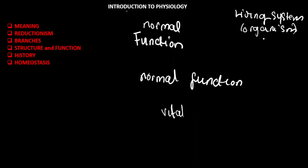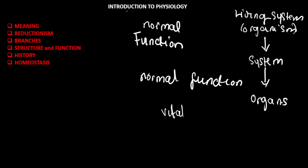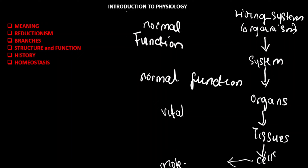In order to study the normal function of this entire organism, which is made up of systems, we would first need a good understanding of the biological systems. To understand the systems, we must understand the organs; to understand the organs, we must understand the tissues; the tissues lead to cells; and the cells lead to the macromolecules that make them up. This is the whole idea of reductionism — breaking down a phenomenon into subunits of what makes up the whole.